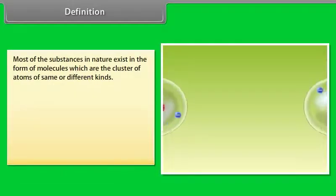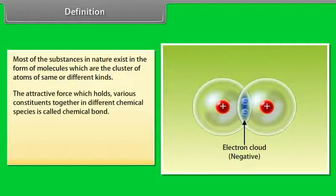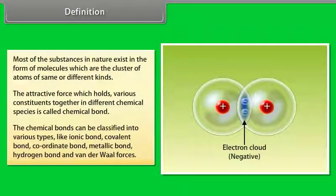Definition. Most of the substances in nature exist in the form of molecules, which are the cluster of atoms of same or different kinds. The attractive force which holds various constituents together in different chemical species is called a chemical bond. Chemical bonds can be classified into various types: ionic bond, covalent bond, coordinate bond, metallic bond, hydrogen bond, and Van der Waals forces.